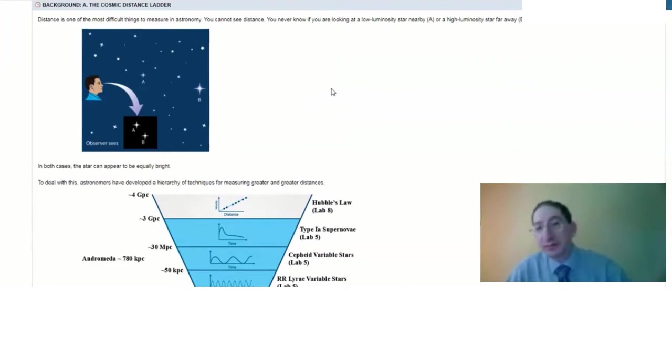However, measuring distance is perhaps the hardest thing to do in astronomy. It's at least one of the most difficult things to do. You can't just see how far away something is. For example, the person in this figure sees stars A and B to be the same brightness, but that does not mean they're the same distance away.